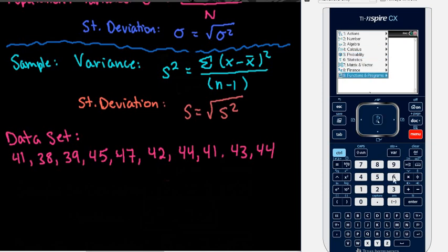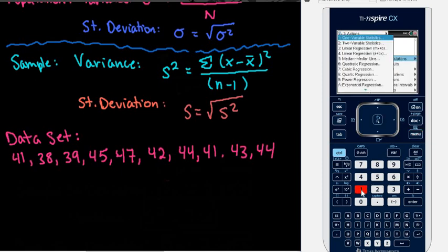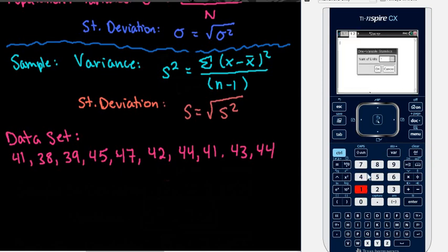I'm going to go down to Statistics. So Menu, Statistics, and then Stat Calculations, and then Option 1, the one variable statistics. We only have one list that we are working with, so I'm going to click OK.